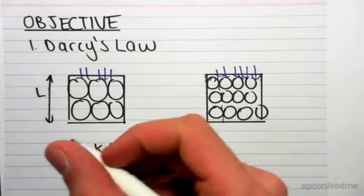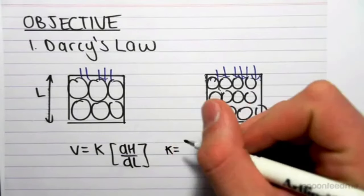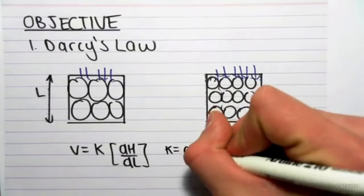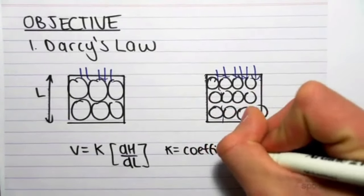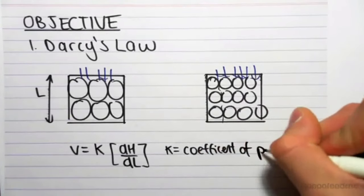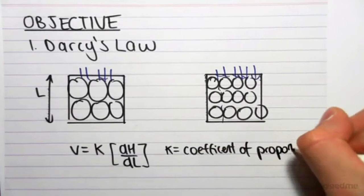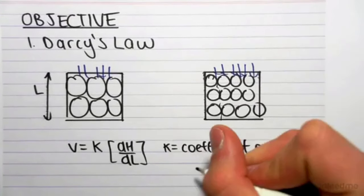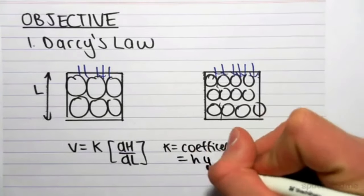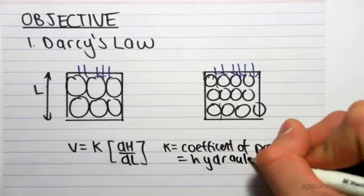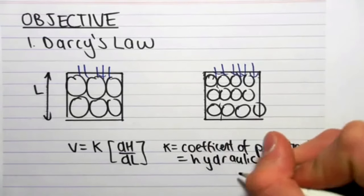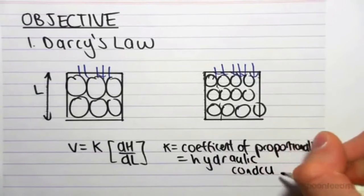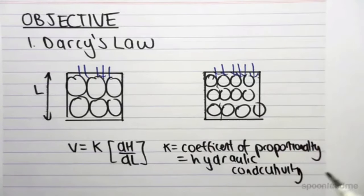K is equal to the coefficient of proportionality, or it's called the hydraulic conductivity. That's what K is. K is dependent on the actual soil sample.